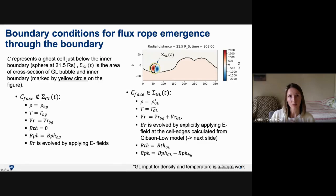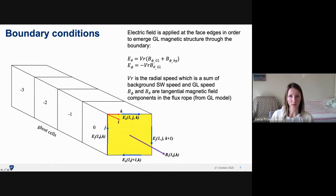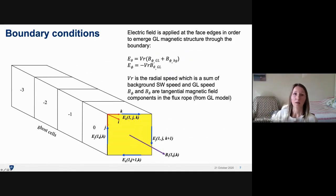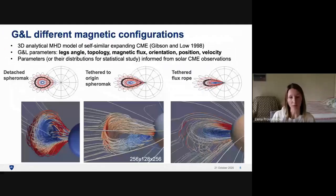To evolve the radial magnetic field, we apply electric fields at the edges of our cells, calculated based on the components of the field tangential to the surface taken from the analytical Gibson-Low solution. The Gibson-Low model is an analytical three-dimensional MHD model that describes the self-similar expansion of a magnetic spheromak, allowing consideration of different magnetic topologies by applying different levels of the stretching parameter.